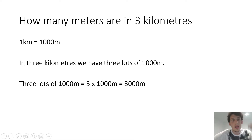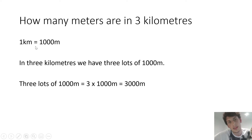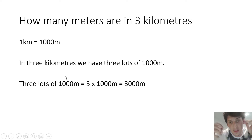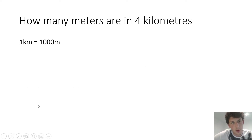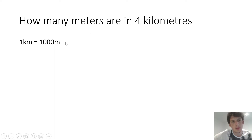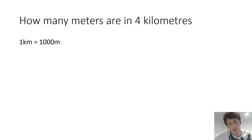We're now going to do another example — how many meters are there in three kilometers? One kilometer is equal to 1,000 meters. Here we have three kilometers, which means we've got three lots of 1,000. Three lots of 1,000 meters is the same as three times 1,000 meters, which equals 3,000 meters. So in three kilometers, there are 3,000 meters. Now we're going to do another example, but you're going to help me out this time — how many meters are there in four kilometers? Please pause the video, complete that task, and then press play when you are ready to continue.